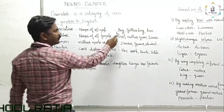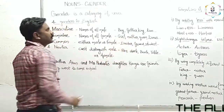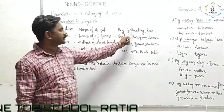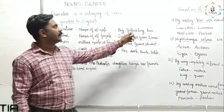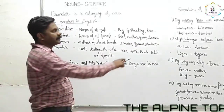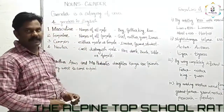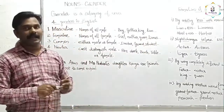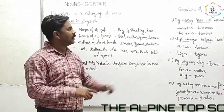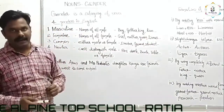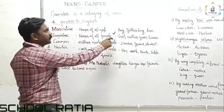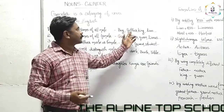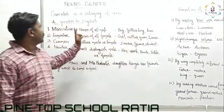For example: boy, father, king, and lion. Boy always denotes a male person, and father always denotes a male person. King also denotes a male person. Lion is an animal — and there is another name for the female lion. So boy, father, king, lion, dog, and brother — these are some examples for masculine gender.